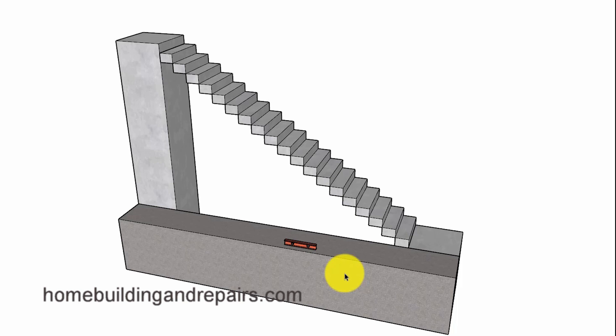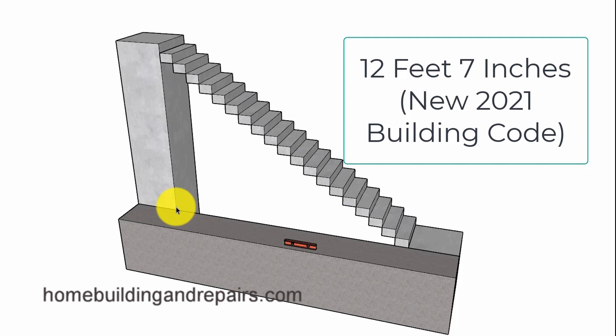Here is something I noticed they changed in the 2021 building code books, and that is the vertical rise or the overall distance that you can install a long set of stairs before adding a landing. That vertical distance used to be from a floor or platform to an upper landing, a vertical distance of 12 feet, and I notice now it's 12 feet 7 inches.